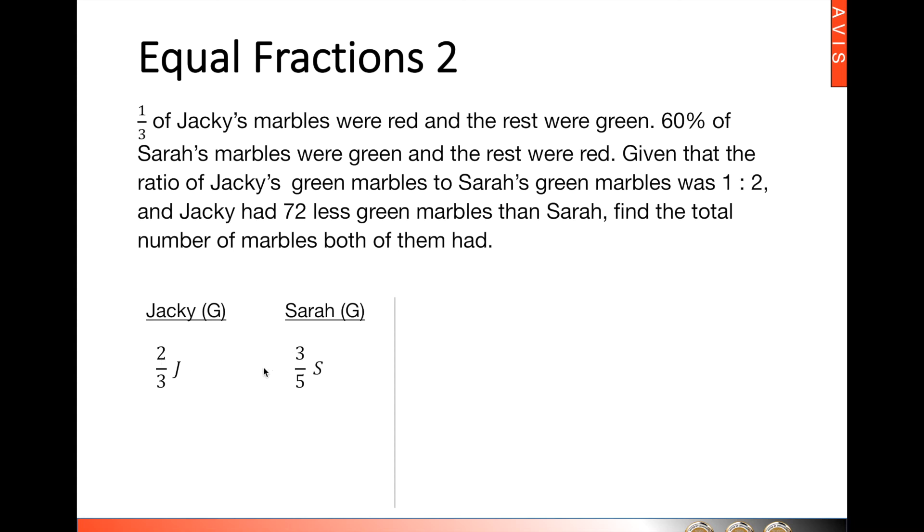The lowest common multiple of two and three is six. So we multiply Jackie's units by three and Sarah's units by two. This will give us six over nine of Jackie, and Sarah is six over ten.